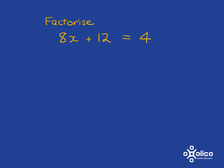So 4 will be what you can take out, and now we just have to figure what goes in the bracket. So remember here, 4 times this must give me 8x, so this must be 2x, and then 4 times this must give me plus 12, so this must be plus 3.